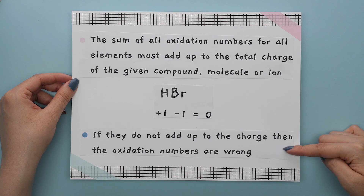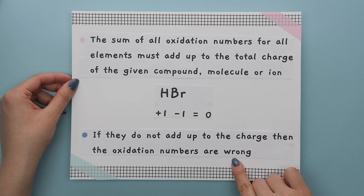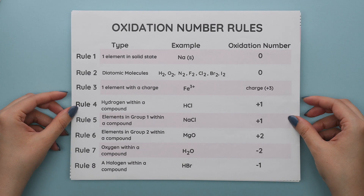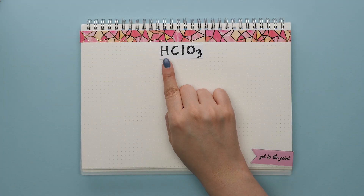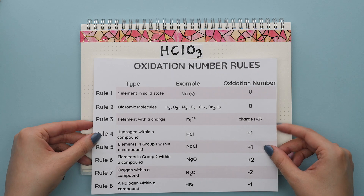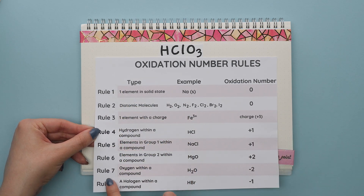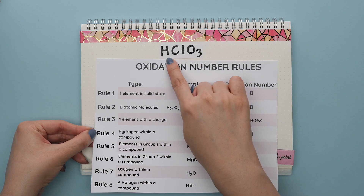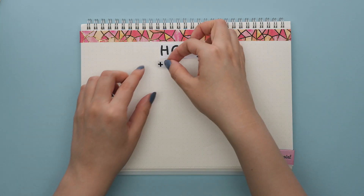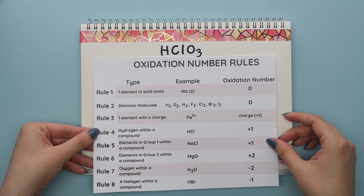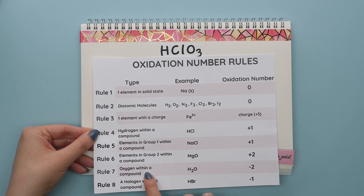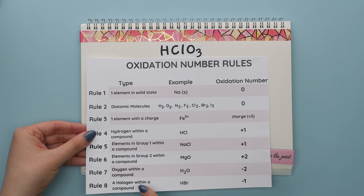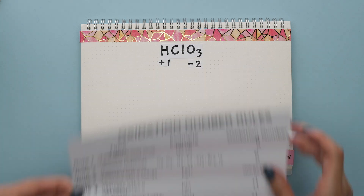If the oxidation numbers do not add up to the charge, then they are wrong — this is a great way to check if you did this correctly. We'll apply these rules for the next examples. The first rule that applies in order is rule four: we have hydrogen within a compound, so the oxidation number of hydrogen is positive one. Next, rule seven applies, so oxygen has an oxidation number of negative two. Continuing to rule eight, a halogen within a compound has an oxidation number of negative one.